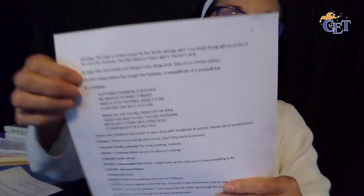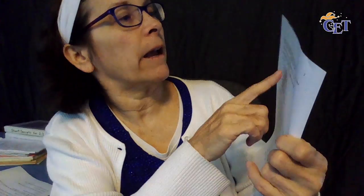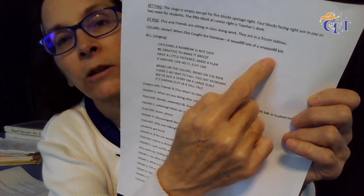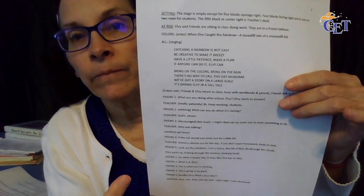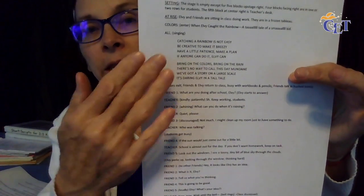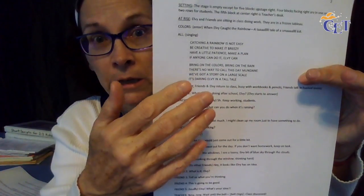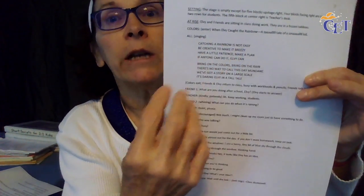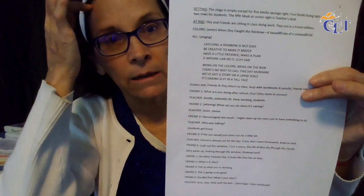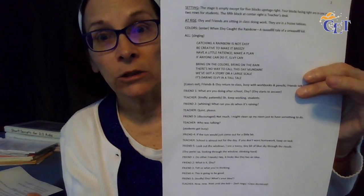Then the colors enter. In this one, the colors were characters. They enter and they say 'When Elvie Caught the Rainbow, a tall tale of a small kid.' Here are the words to the song, and everybody's going to pop up and sing. For words to the song — this is what I do, it's not what everybody does — but this allows your actors to know, and you when you're going back through it, where that song is. This is different; it's not just dialogue. So I've got them all caps and indented. That's how I do my songs as well.